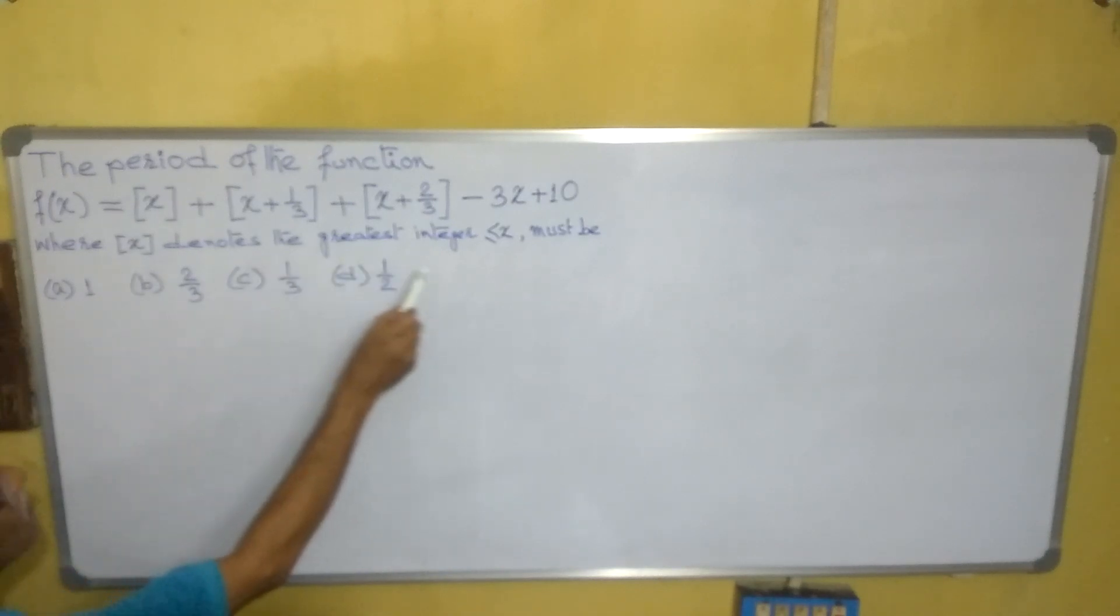Box x, as you know, is the greatest integer less than or equal to x. So the period is which of these options we have to choose.